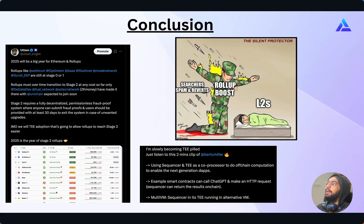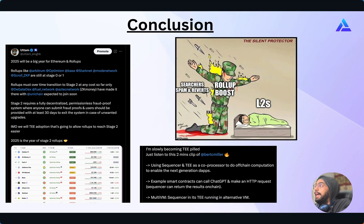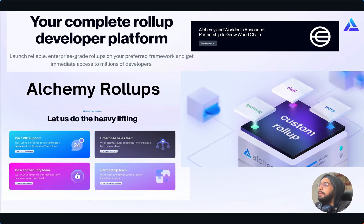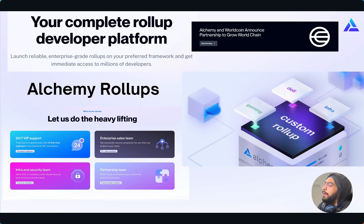Under the rollup-centric roadmap, rollups must over time transition to stage 2 decentralization, which calls for trustless fault proofs. TEEs can accelerate this process by acting as a second prover in addition to an optimistic or ZK proof system, allowing rollups to depower their security council and transition to stage 2 faster. Rollups can also use TEEs to implement multi-provers for faster finality and increased safety from prover bugs. If you are planning to launch your own rollup with or without Rollup Boost, Alchemy provides end-to-end solutions to deploy fully serviced, production-ready rollups with all essential infrastructure from day one. Visit alchemy.com to learn more.